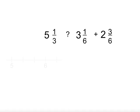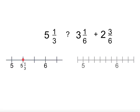Here we have five and one-third and on a number line it is there. To evaluate the other side of the statement we know that three plus two is five, and one-sixth plus three-sixths is four-sixths. So our total is five and four-sixths. Now we can see that five and one-third is less than five and four-sixths.